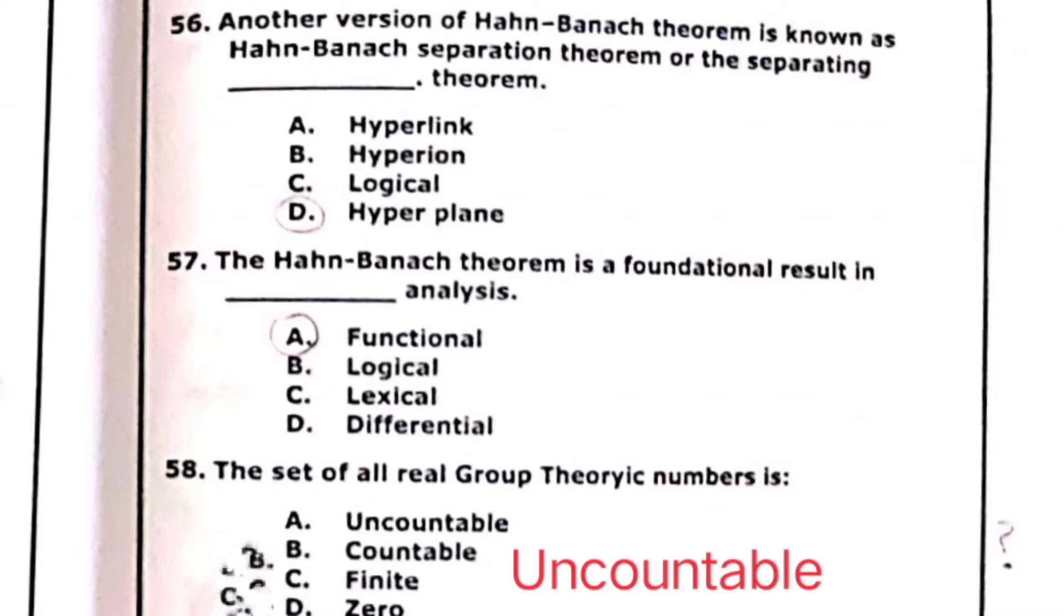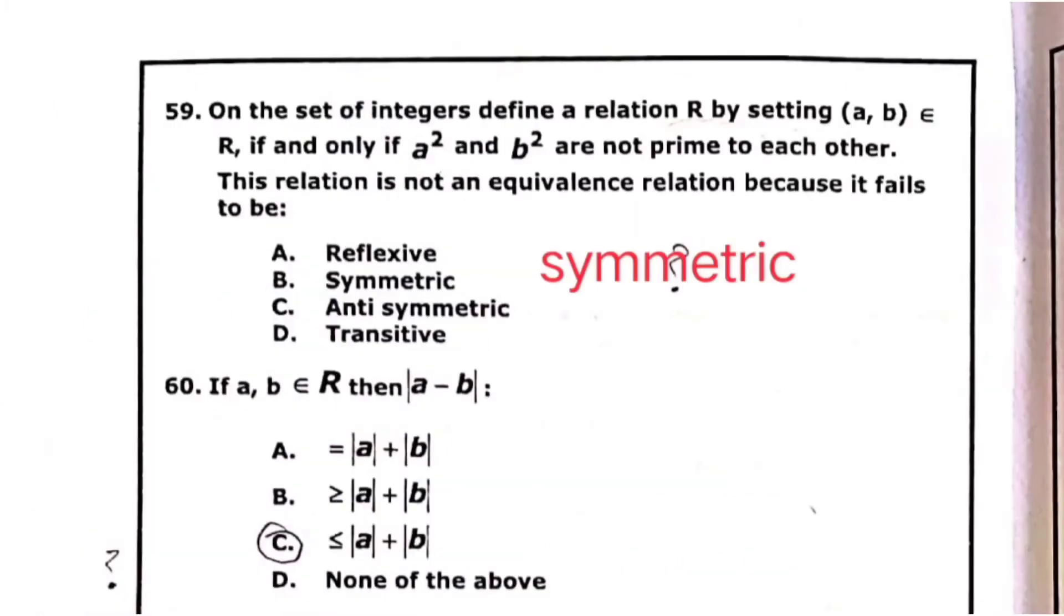The set of all real group theoretic numbers is when we check then the answer is basically uncountable. Because the real numbers, the set of all real numbers is uncountable.